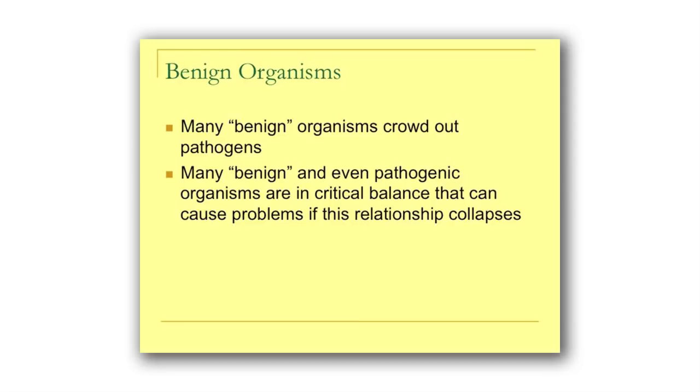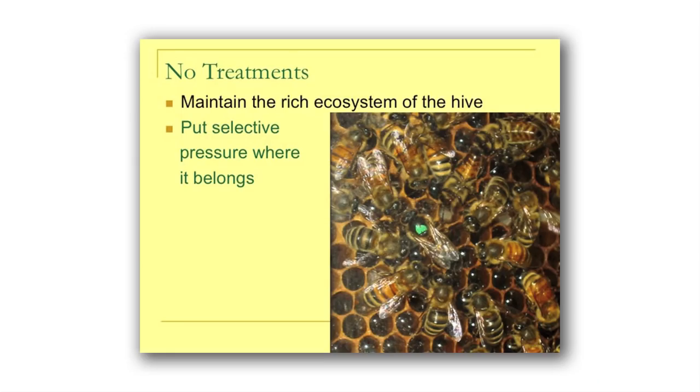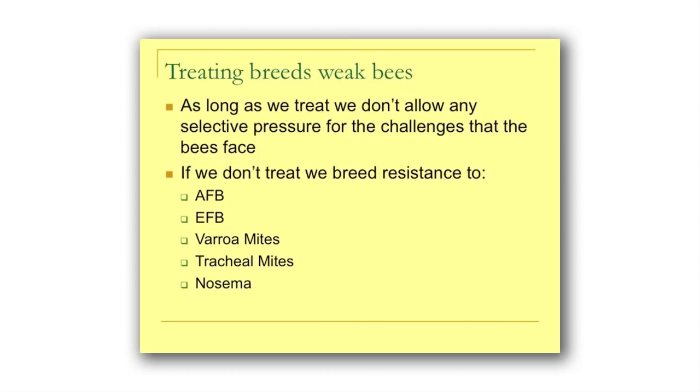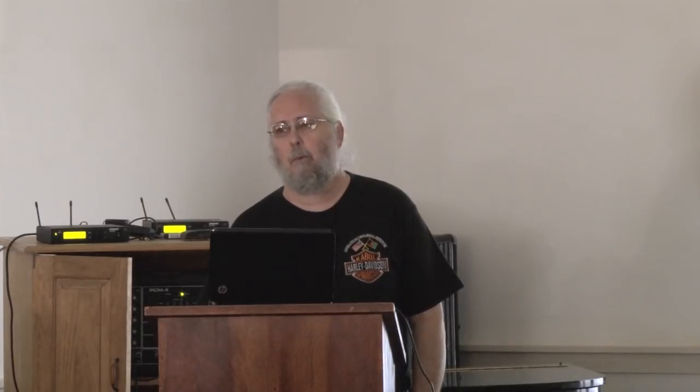These microorganisms form a whole community — sometimes one microorganism produces a byproduct that allows another to live there, creating very complex relationships. The second reason for no treatments is to put the selective pressure where it belongs. I'm always baffled by people who are trying to breed varroa-resistant bees while still treating their bees — that's a contradiction. As long as you're treating them, how are you going to breed bees that don't require treatments when you don't even know if they require them, because you're still treating?